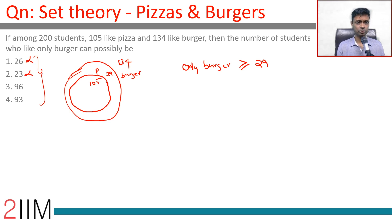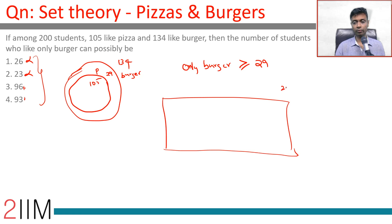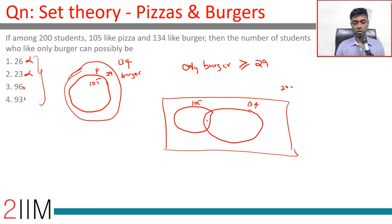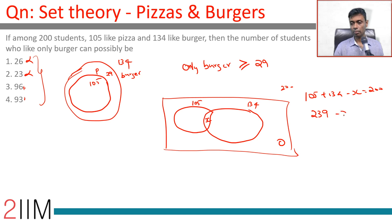There is clearly an upper bound as well. To find it, the pizza and burger overlap should be as small as possible. This is 105, this is 134. Let the overlap be x, so 105 plus 134 minus x equals 200. That gives 239 minus x equals 200, so x equals 39. Only burger would be 134 minus 39, which is 95.